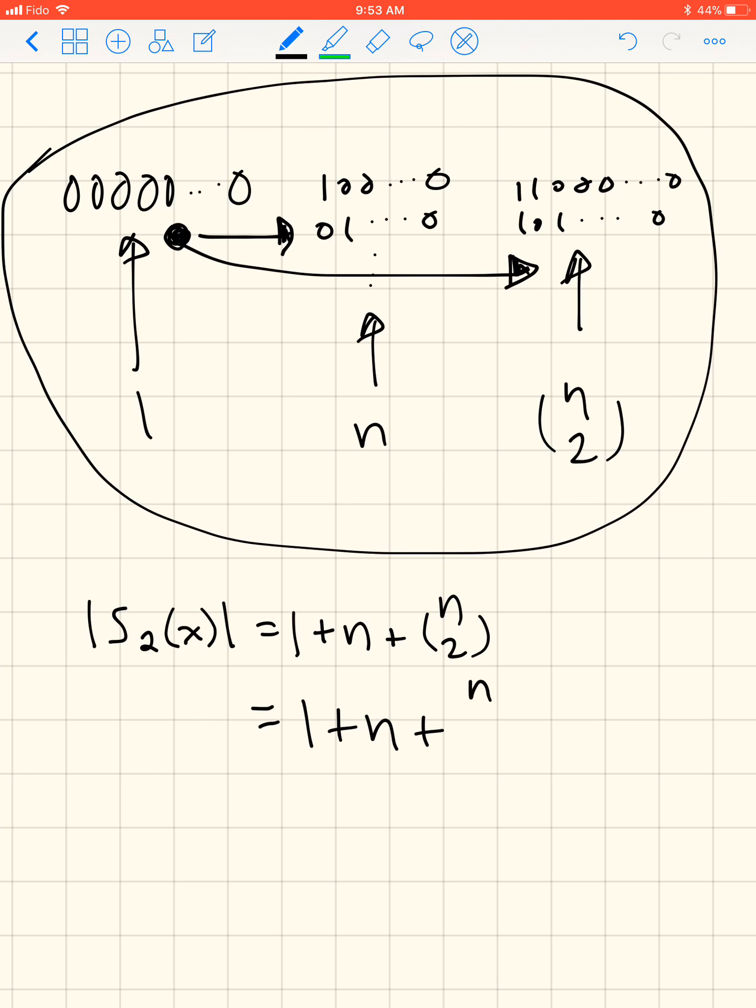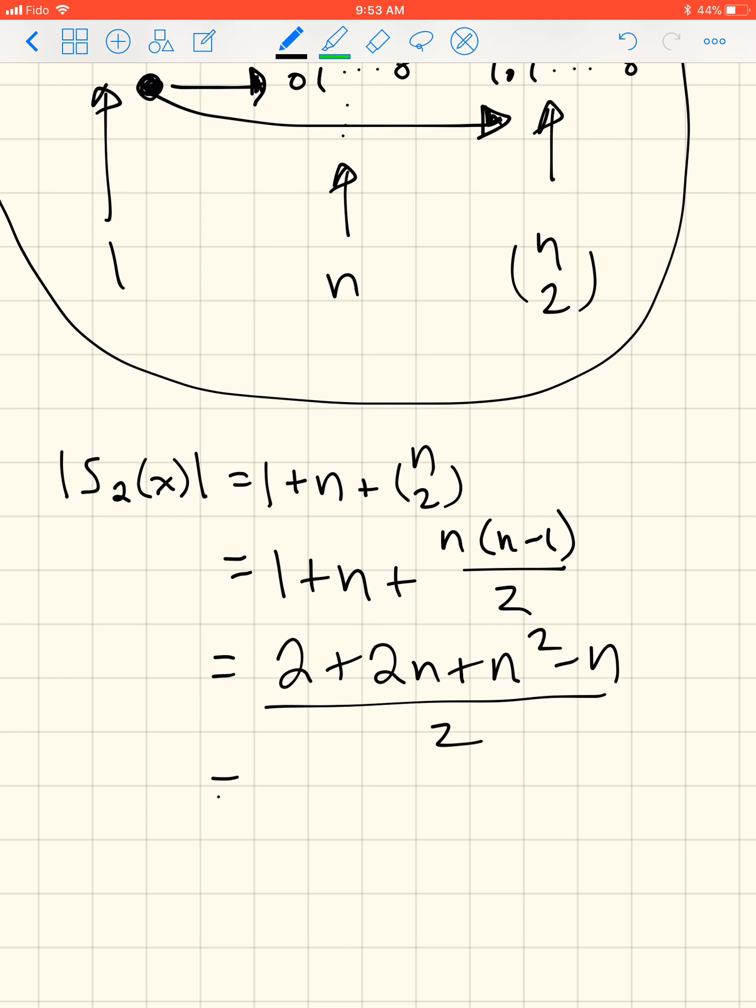So any time we have n choose 2, we can say it's n times n minus 1 over 2. So let's see, 2 plus 2n plus n squared minus n. This is the simplified form showing it equals the given answer.